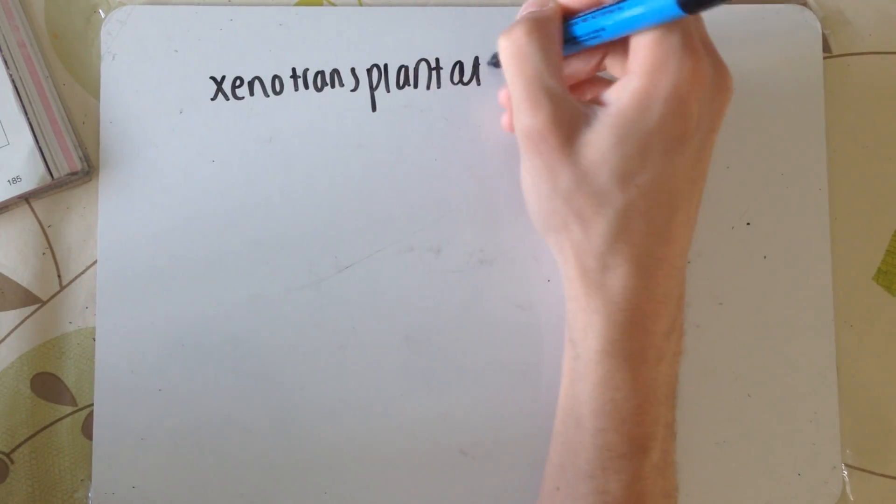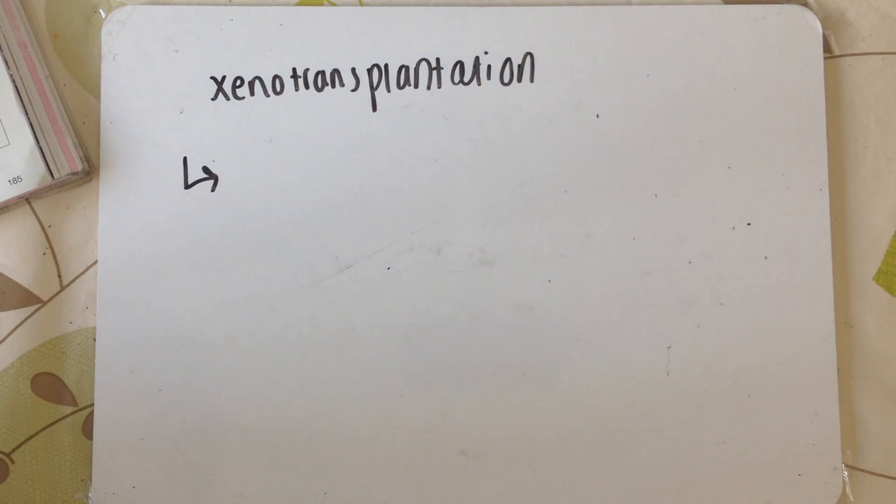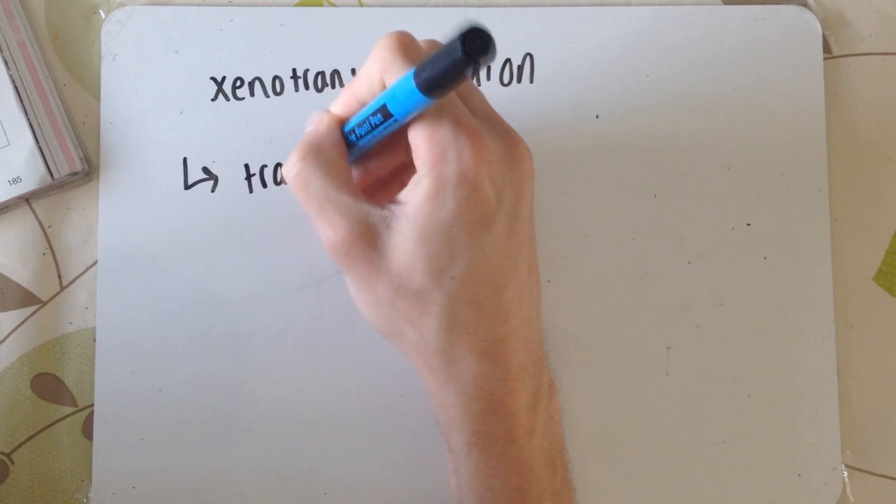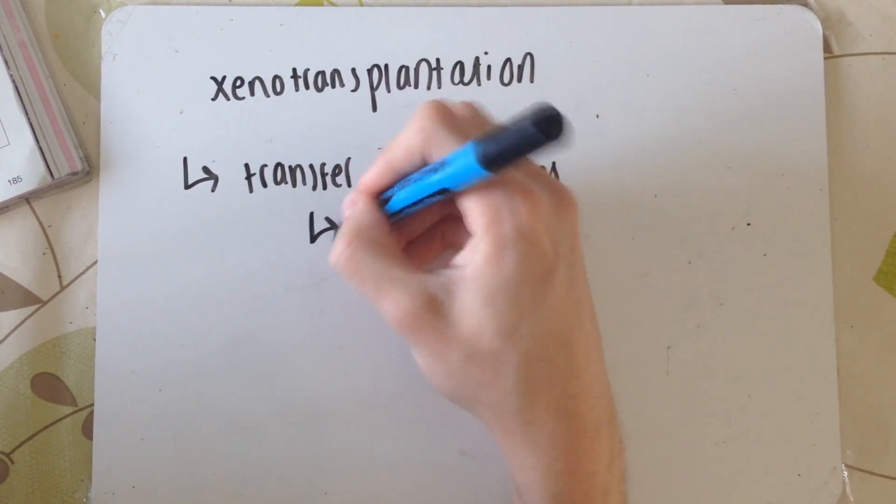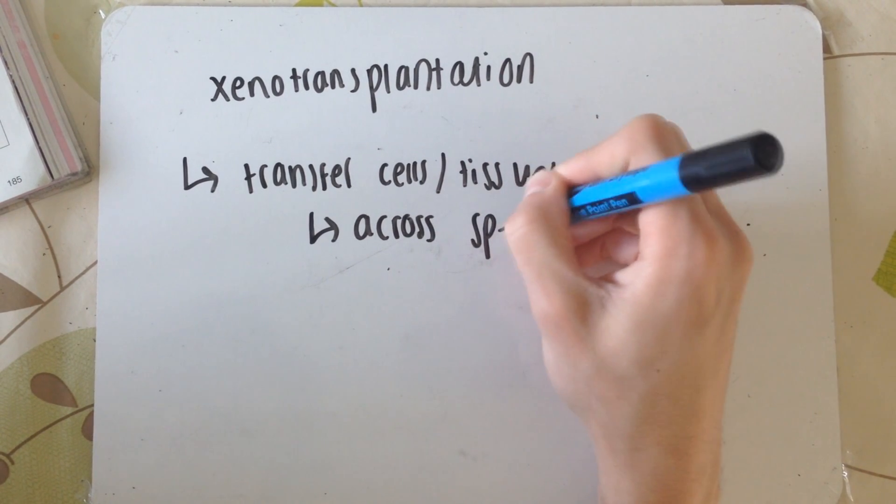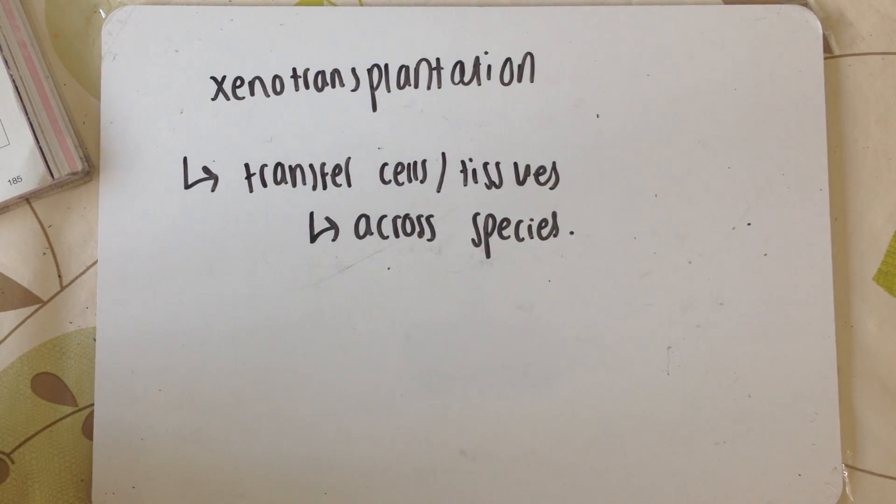We're going to quickly talk about xenotransplantation. You're basically transferring cells and tissues across species. For example, from the picture in the book, it shows a rat growing an ear that would be put on a human. You should also know that allotransplantation is transplantation between animals of the same species.